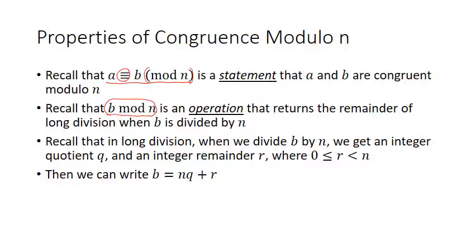I'm going to remind you of the quotient remainder theorem, which states the following. When you do long division and divide b by n, you get an integer quotient q and an integer remainder r, where r is in the range from 0 inclusive to n non-inclusive. You're able to write b in the form b equals n times the quotient plus the remainder.